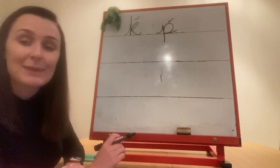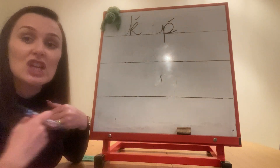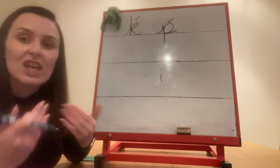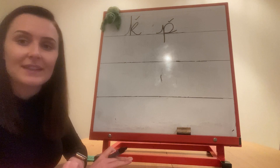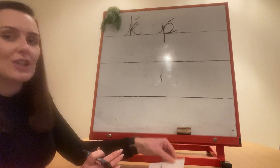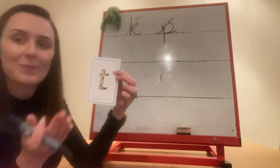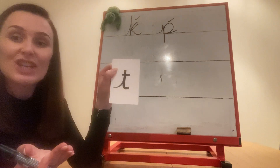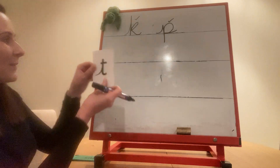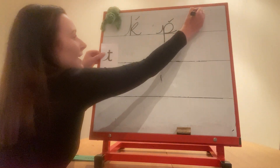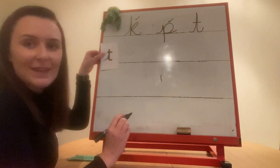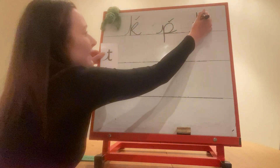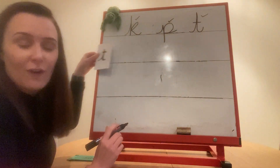Our last speed sound today is T, t, t. Write it. Have you done it? Let's check. T, t — tower. It looks like this: up we go, down the tower, across the tower. If yours looks like mine, give it a tick or fix it. Tick or fix.